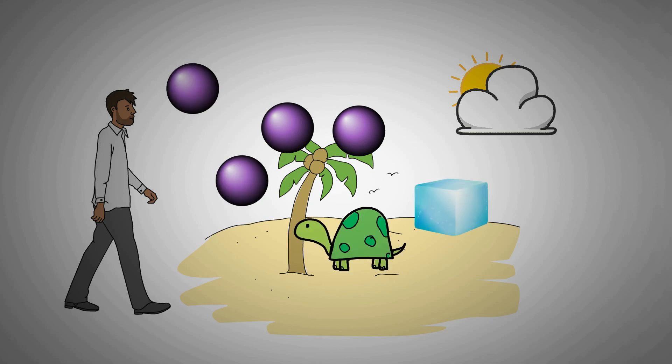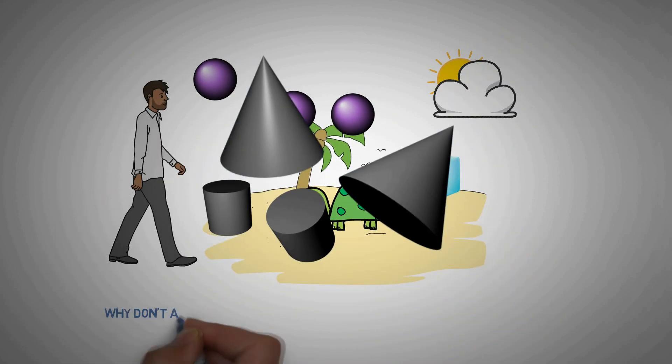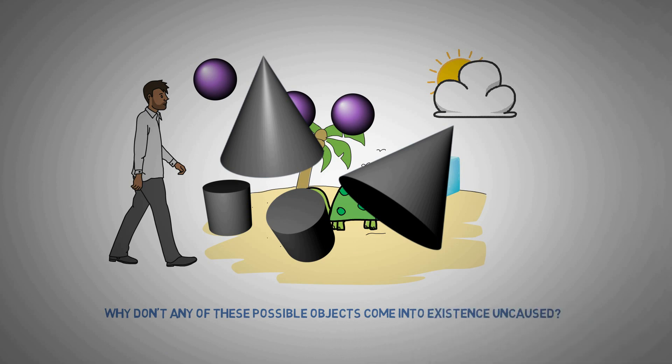There are infinitely many possible objects of any size and shape. So why don't any of these possible objects come into existence just uncaused? None of them came into existence before your eyes in the last 30 seconds, right? But why not?